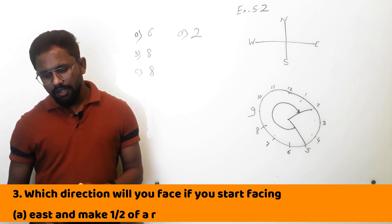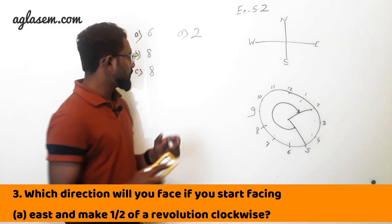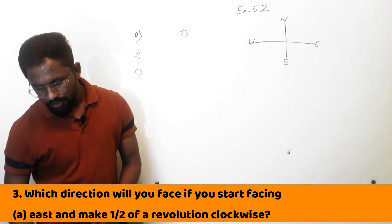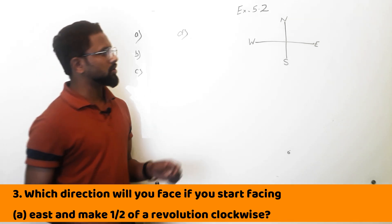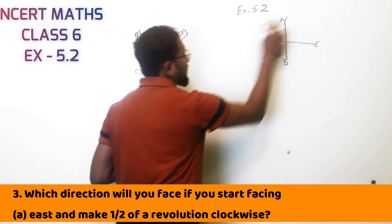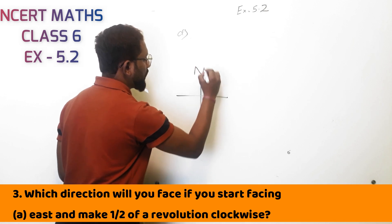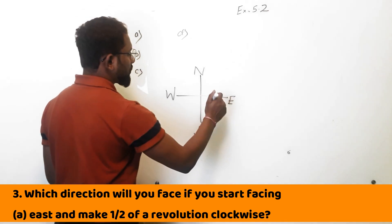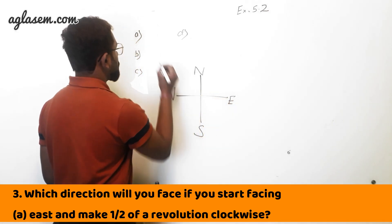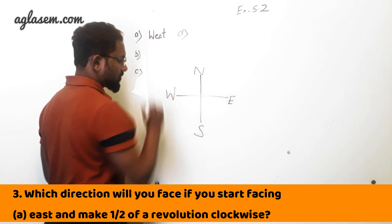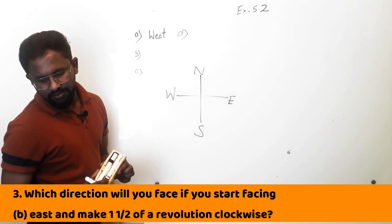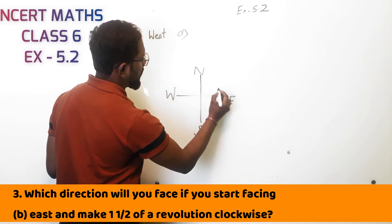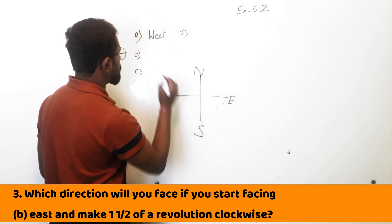Question 3: Which direction will you face if you start facing east and make half of the revolution? You are facing east and making half of the revolution, so you will be at west. For east and making one whole revolution and then half a revolution more — you start, complete one revolution, then take half again, so you are again at west.